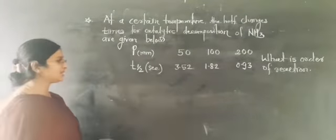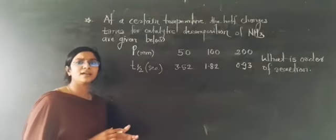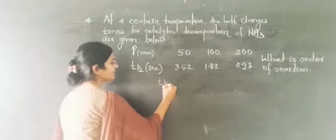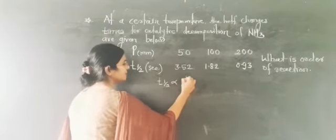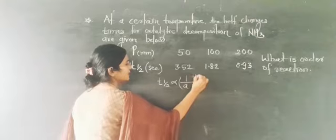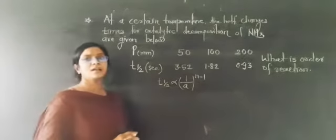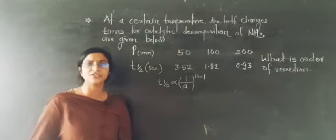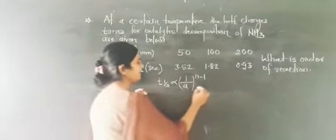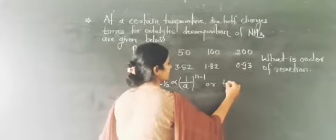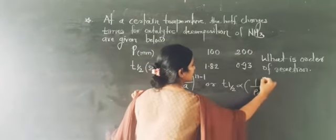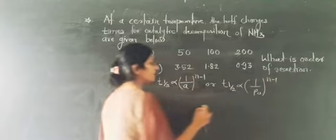As I already told you in the theory lecture, T½ is inversely proportional to A raised to the power (n − 1). This is the relationship related to the initial concentration of the chemical reaction, or equivalently to the given initial pressure.